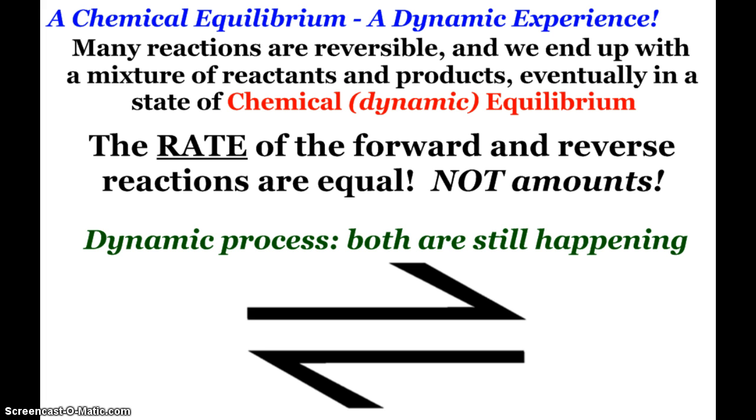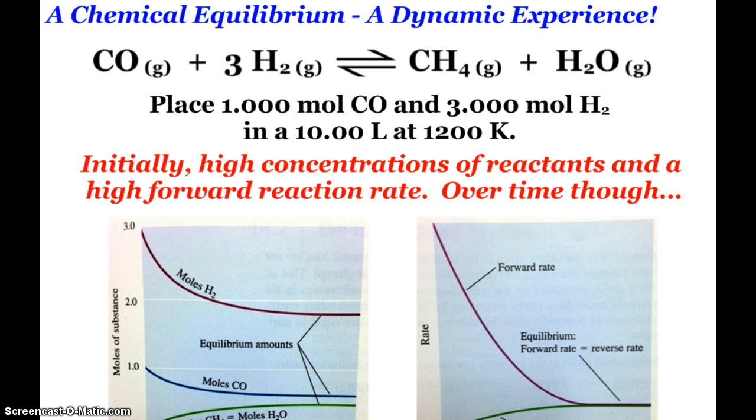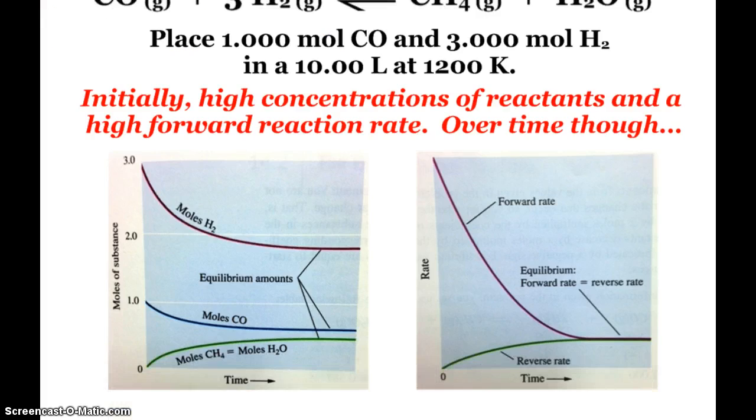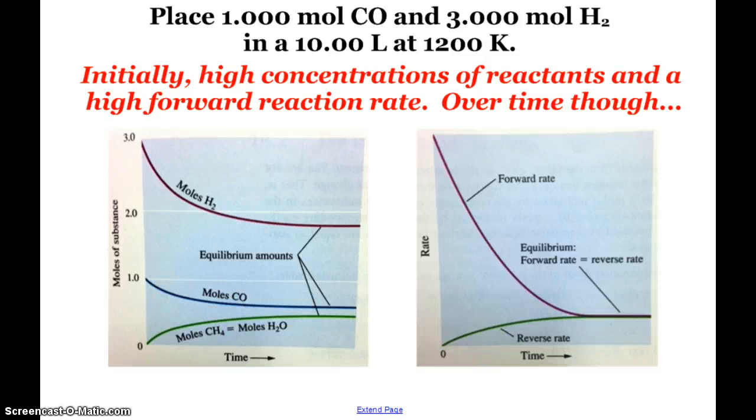So when we look at an example of a chemical equilibrium, here we have a reaction that we'll look at several times here today. If I take one mole of carbon monoxide and three moles of hydrogen, place it in a 10-liter flask at 1200 Kelvin, I can see a couple graphs here.